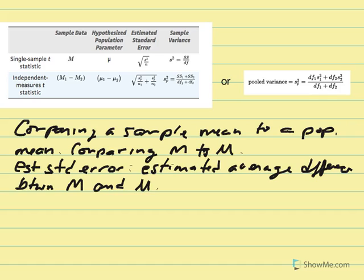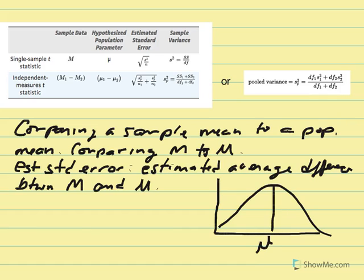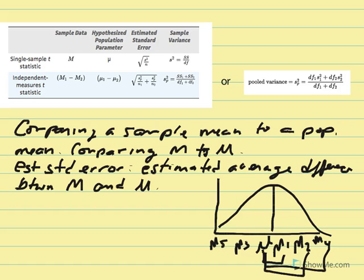The estimated standard error represents the estimated average difference between the sample mean and population mean. Visually, if we're talking about a treated population, the untreated population mean would be in the center. We'd take samples — sample one, two, three, four, five — and theoretically, if we had access to all possible population samples, we could create a distribution of sample means. Each value deviates from the population mean a certain amount, and the estimated standard error represents the average of those differences.